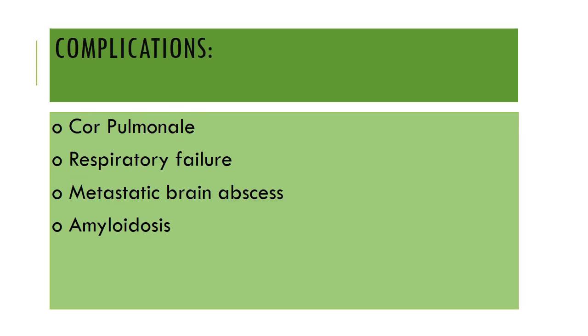Complications of bronchiectasis include cor pulmonale, that is right-sided heart failure due to lung disease. Respiratory failure can also occur, as well as metastatic brain abscess and amyloidosis.